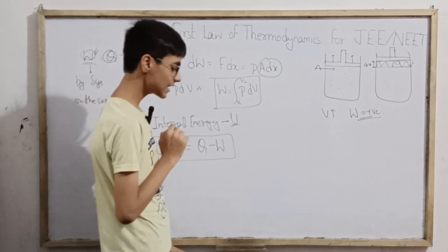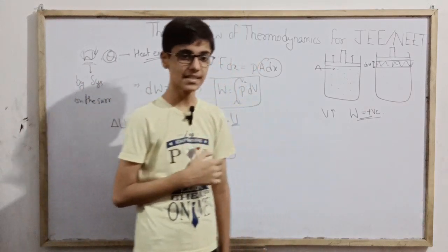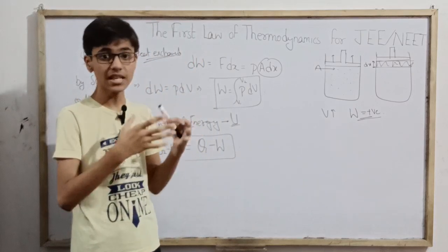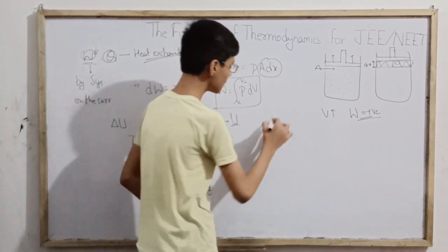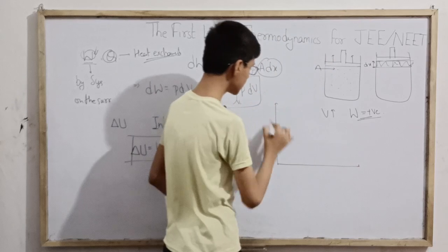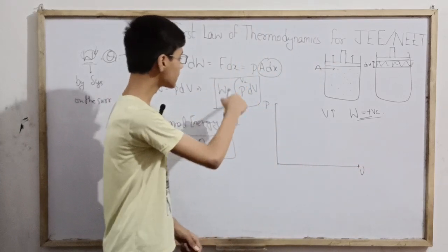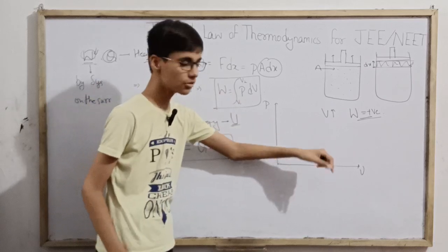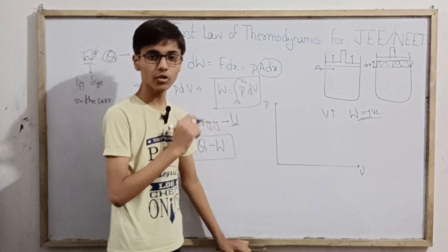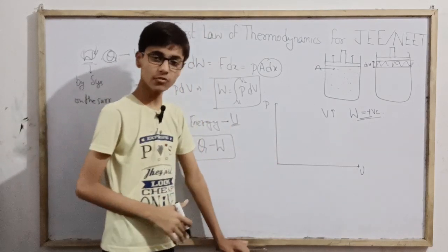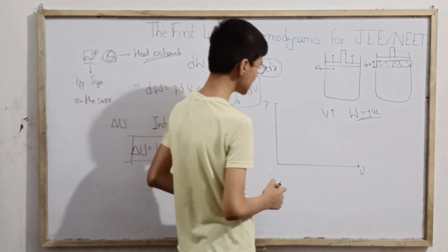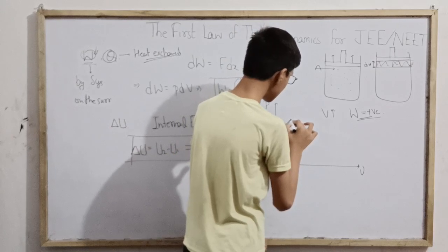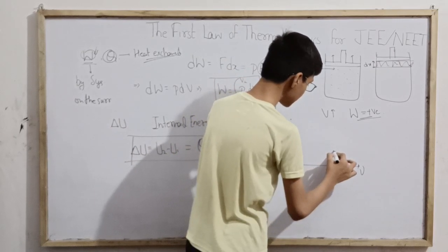We define the change in internal energy, which is really significant compared to internal energy itself. For a change from thermodynamic state 1 to state 2, the change in internal energy ΔU = U2 − U1 equals the heat added to the system minus the work done by the system (Q − W). If heat is added, internal energy increases; if the system does work, volume increases, temperature stays the same, so pressure decreases. Now let's discuss about paths in any thermodynamic process — the intermediate steps through which the thermodynamic system proceeds. Let's draw a PV diagram: pressure on y-axis, volume on x-axis.